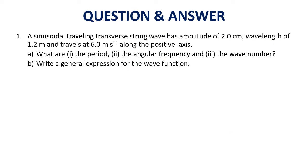We look at the first question about wave. A sinusoidal traveling transverse string wave has amplitude A, wavelength lambda, and travels at 6 meters per second, which is V, speed of wave, along positive x-axis. This means it moves to the right. Then what are the period, frequency, and also the wave number?